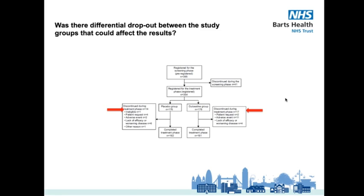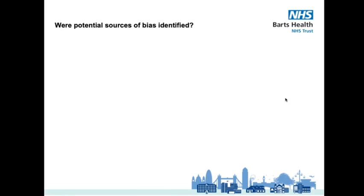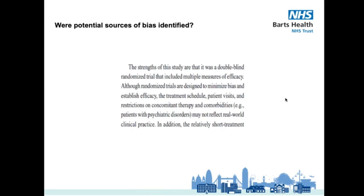Our next point asks: were potential sources of bias identified? There's no real identification of bias except for one rather brief paragraph in the discussion section on page 817. We might be inclined to answer yes to this consideration point, but perhaps more consideration would have been desirable here.